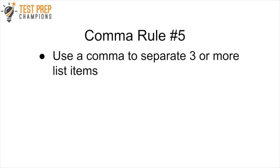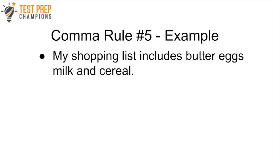Comma rule number five is to use a comma to separate three or more list items. For example: 'My shopping list includes butter eggs milk and cereal' is missing commas. We want a comma after 'butter,' after 'eggs,' and after 'milk': 'butter, eggs, milk, and cereal.'